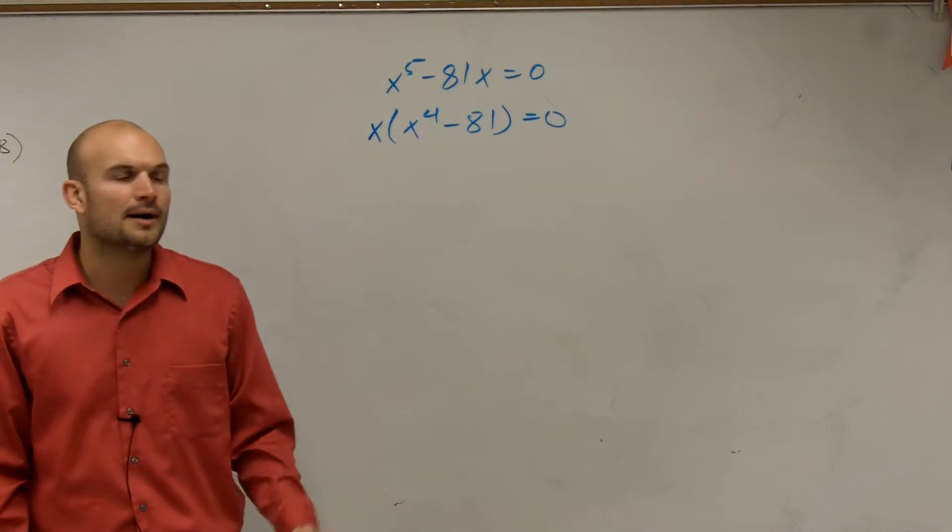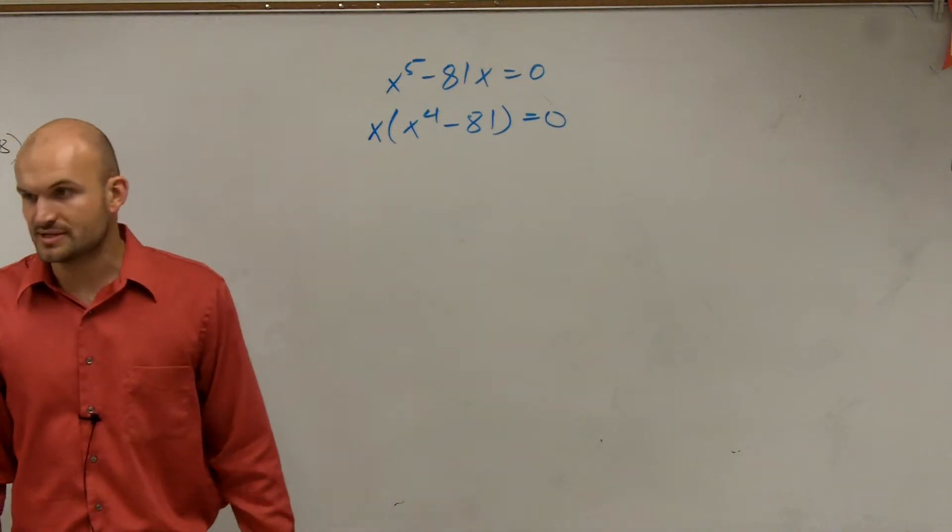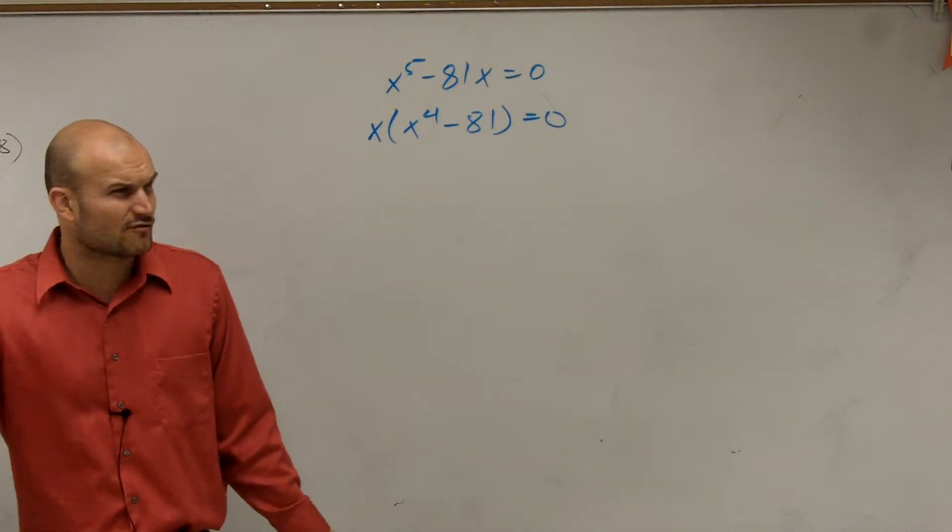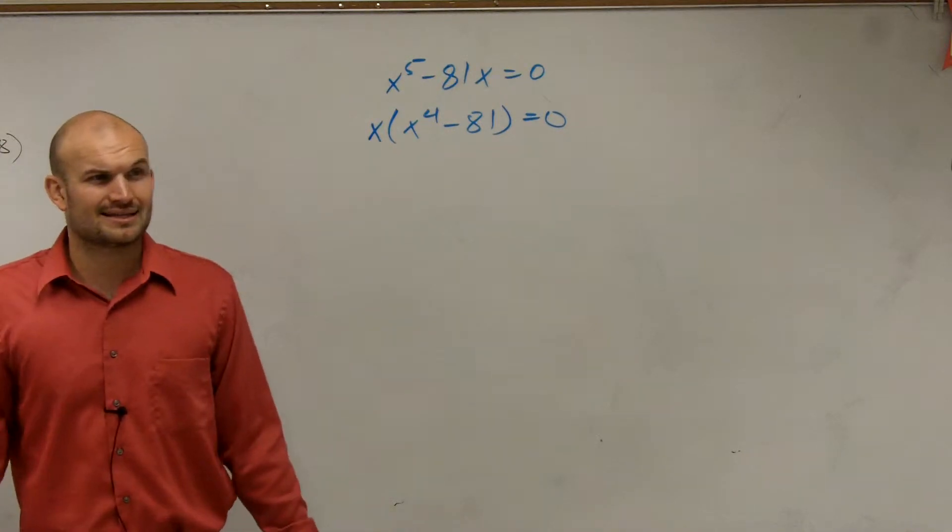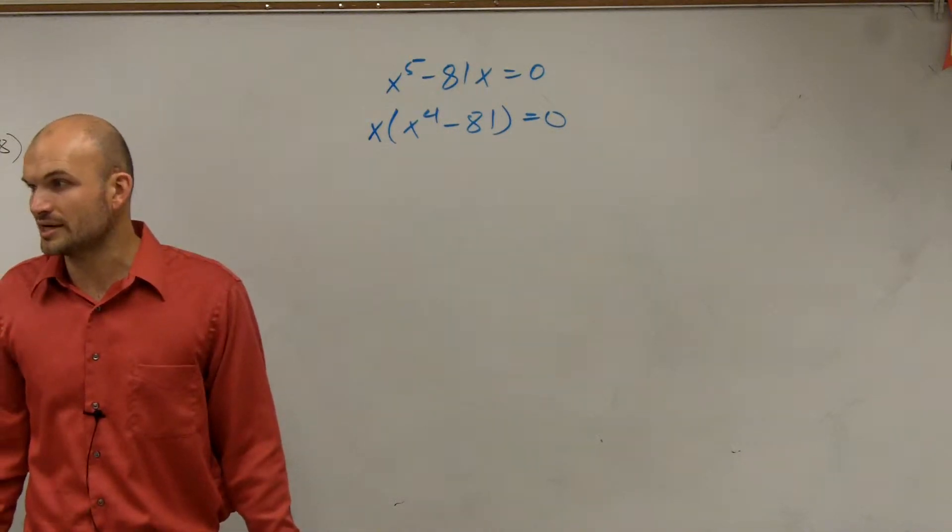Now we could just set these both equal to 0 and then solve, try to take the fourth root of x. But to me, that kind of sounds a little bit confusing, right?